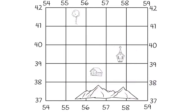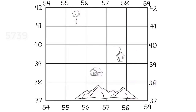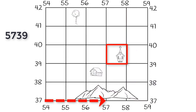If we were given a coordinate of say 5541, we would first move right to 55 and then up to 41. Here we see a tree located at that coordinate. Now you go ahead and try coordinate 5739. What did you see there? If you see a church, you would be correct. Again, we move right to 57 and then up to 39, locating this square. That's it — now you can read a four-digit grid.